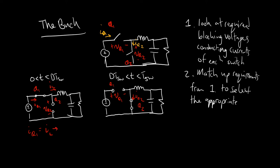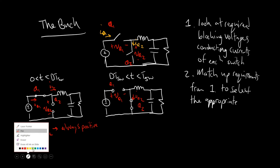We're going to assume that the inductor current ripple is not larger than the average current, which means the inductor current should always be positive — current is always going to flow from source to load. So IQ1 is always going to be positive. And we can think about VQ2.